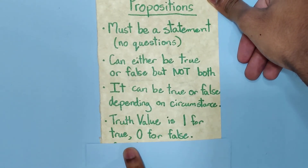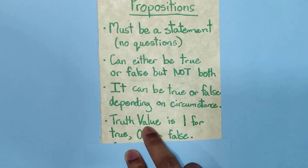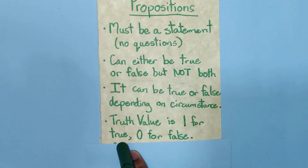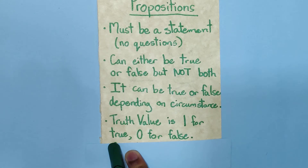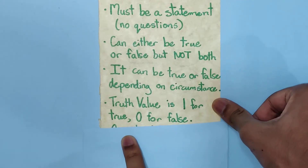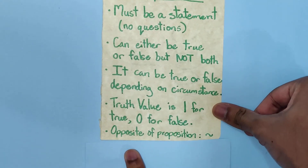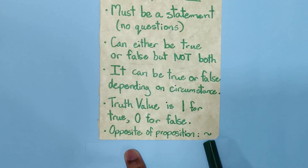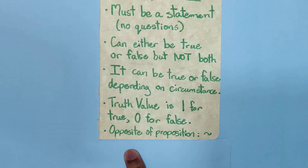Every proposition is given something called a truth value, which can either be 1 or 0, and essentially it describes whether or not the thing is true or false. If it is true, it is given a truth value of 1; if it is false, it is given a truth value of 0. Instead of 1 and 0, the letters T and F can also be used in some places. The last thing to note is that for any given proposition, its opposite will be noted by this symbol here, and it will be called 'not that proposition.'